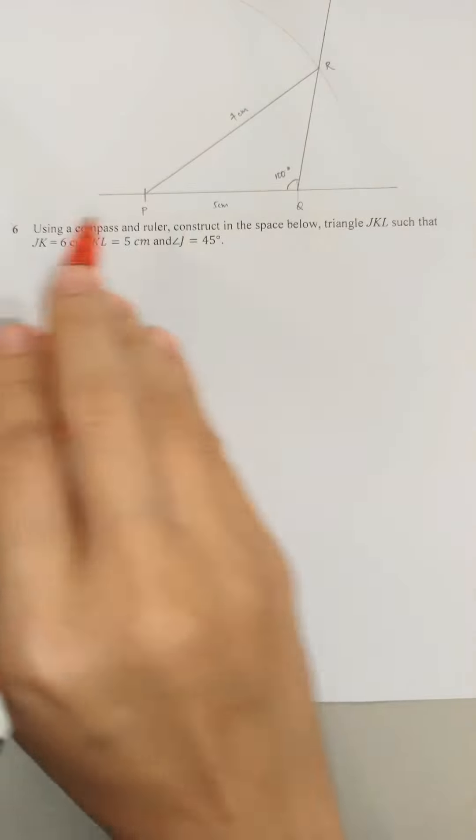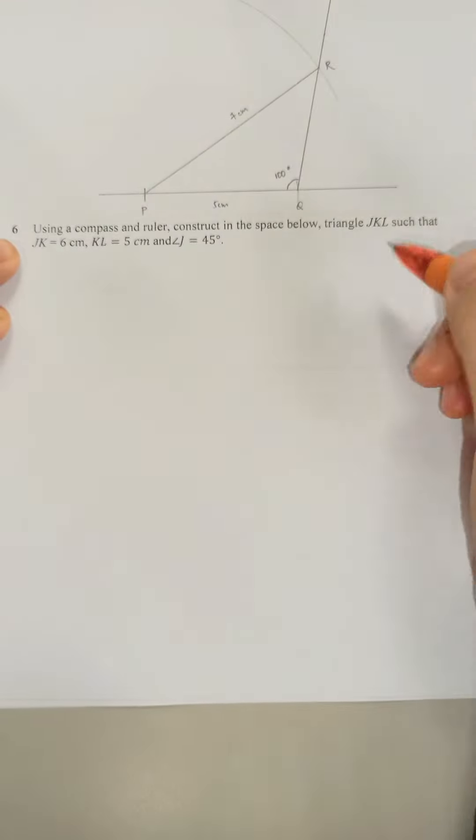Okay, so now moving on to question 6. Triangle J, K, L. I'll just draw three sides again because triangle.